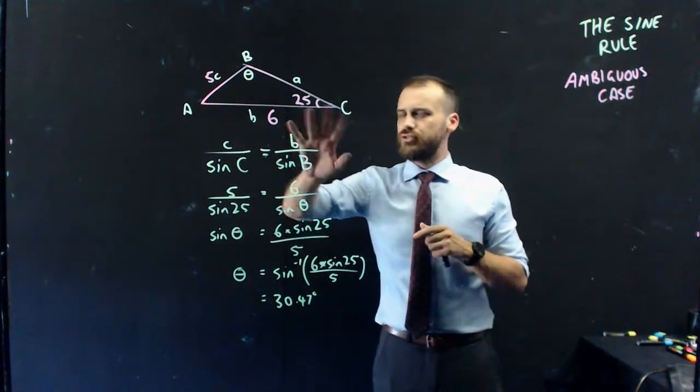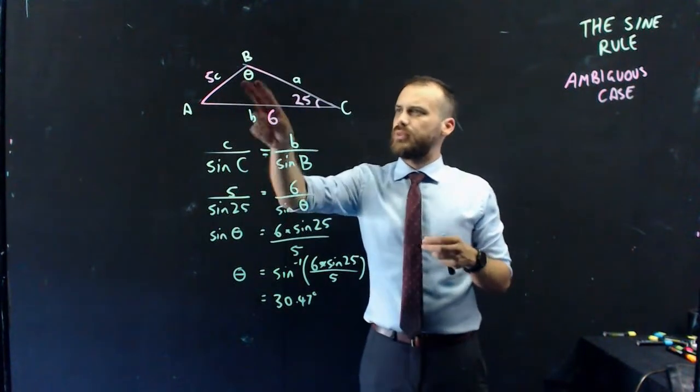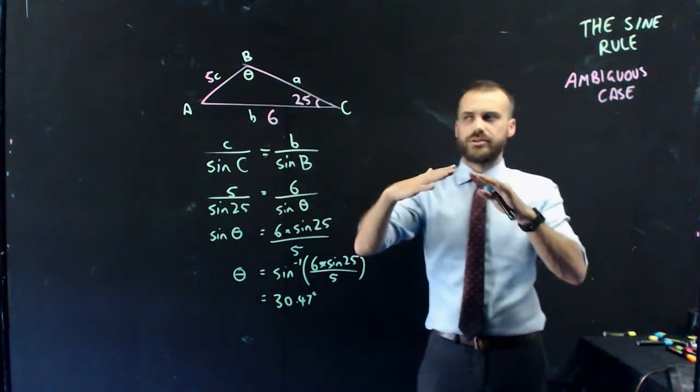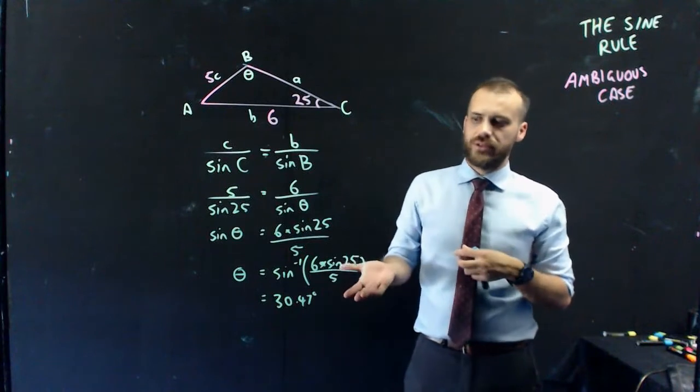This triangle, it's drawn roughly to scale. That's about 25 degrees, that's 6, that's 5. This angle here, it's obtuse. It's bigger than 90 degrees. So why am I getting an answer that's 30.47?